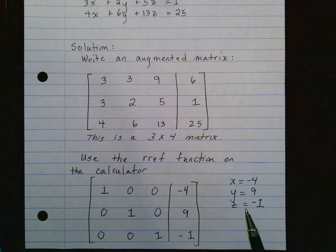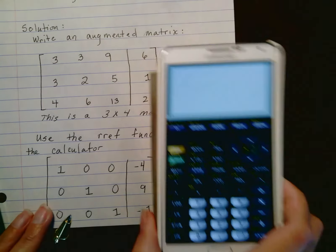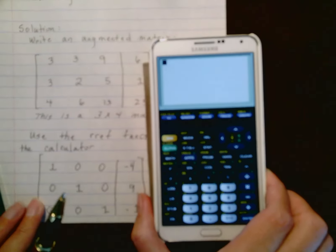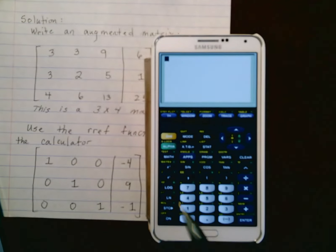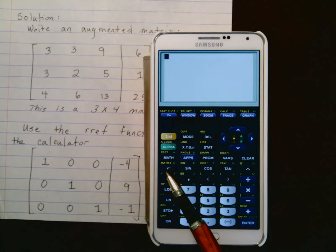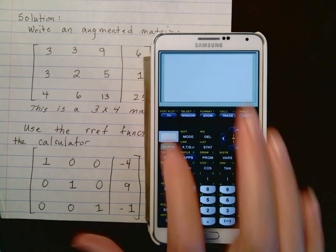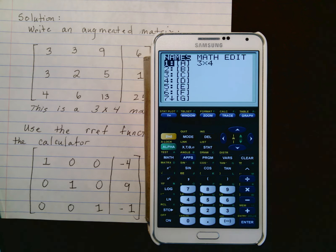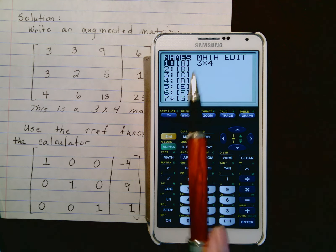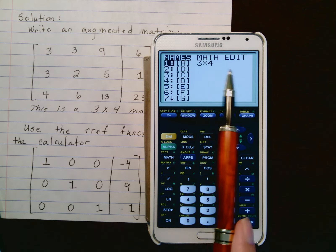Let me show you how to do this on the calculator. First of all, you have to find the matrix feature on your graphing utility. If you look closely, there is a matrix feature right here above this x to the minus 1. So hit 2nd, matrix, and you'll see there's three choices: names, math, and edit.